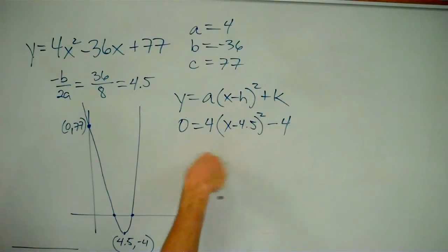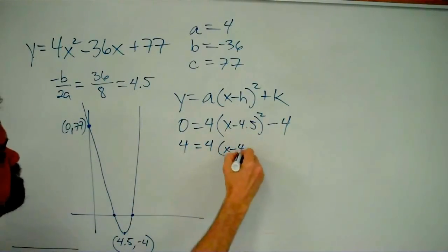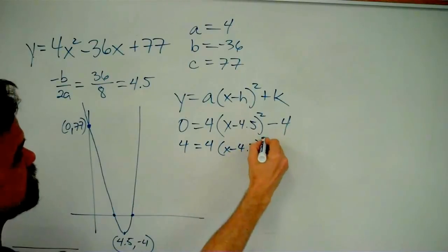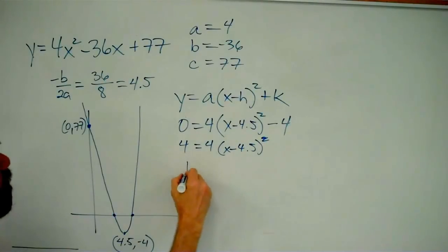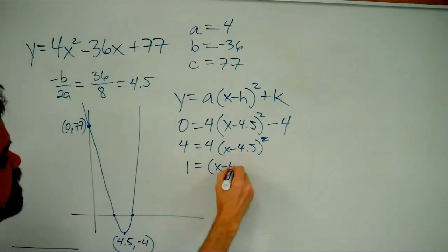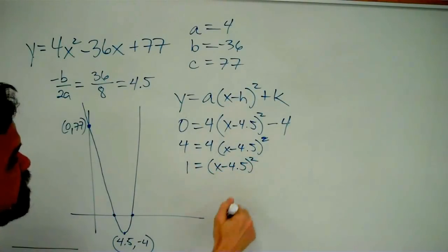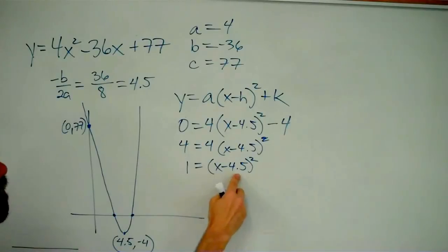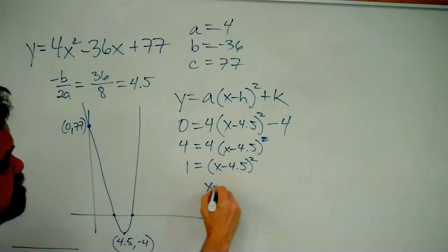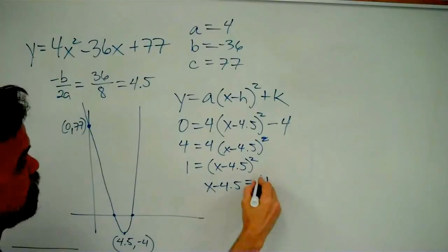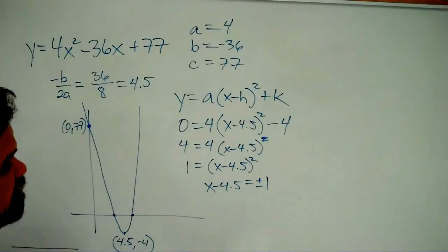What do I do? I'm going to add 4 to both sides. I get 4 equals 4 times x minus 4.5 squared. And now I divide everything by 4, and I get 1 equals x minus 4.5 squared, which means whatever I have inside of here being squared equals 1. That means what I have inside of the parentheses must be either 1 or negative 1. So x minus 4.5 equals 1 or negative 1.